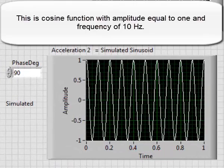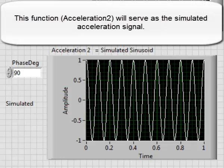This is a cosine function with amplitude equal to 1 and frequency of 10 Hz. This function, acceleration 2, will serve as the simulated acceleration signal.